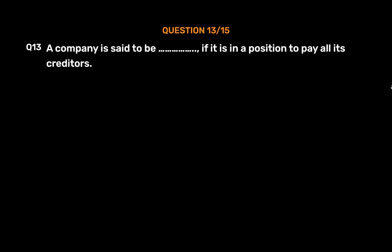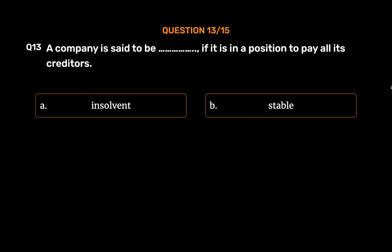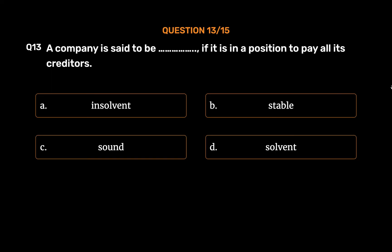Question number 13. A company is said to be [blank] if it is in a position to pay all its creditors. Option A: Insolvent. Option B: Stable. Option C: Sound. Option D: Solvent. The correct answer is Option D — Solvent.